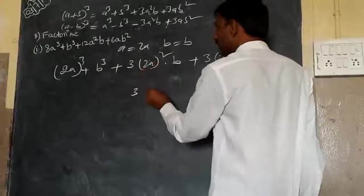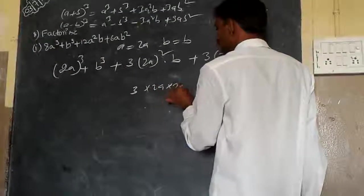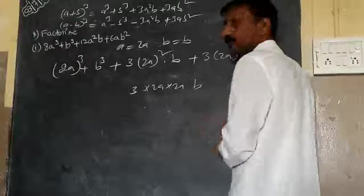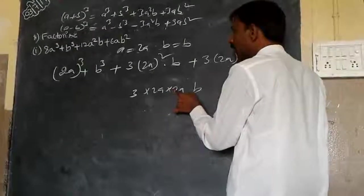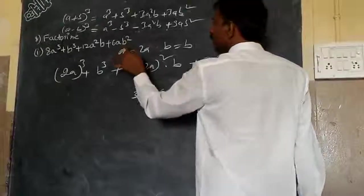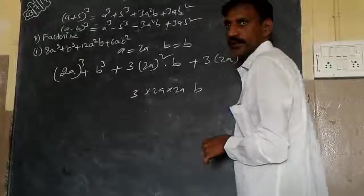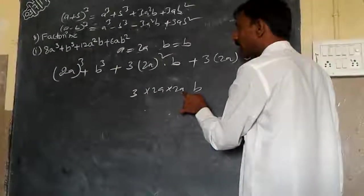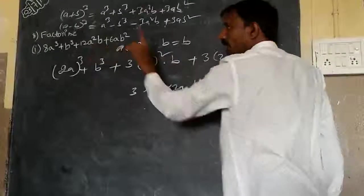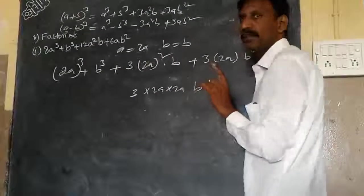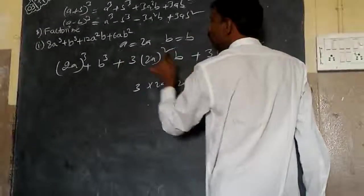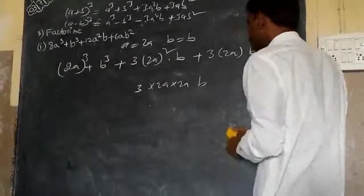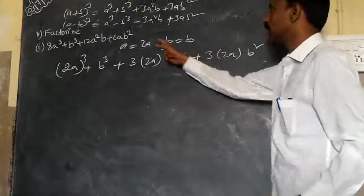3, (2a)² means what? 2a into 2a into b. 2 times 3 is 6, 6 times 2 is 12. a into a is a² by b. When we simplify this one we get this one. Similarly this one also, we get this one only.